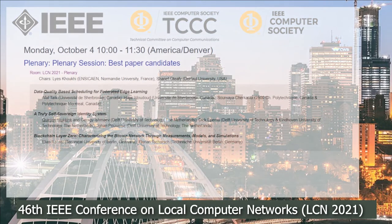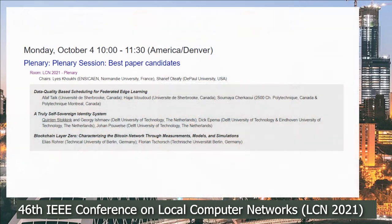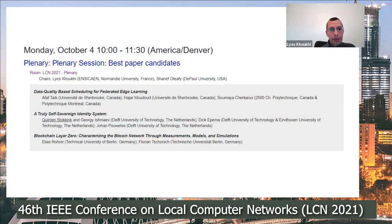We go to the third speaker, who is Elias Roher, and the title of his presentation is 'Blockchain Layer Zero: Characterizing the Bitcoin Network — Measurement Models and Simulations.'